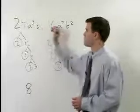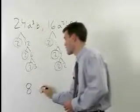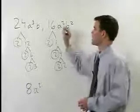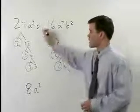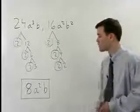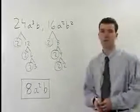Since we have an A cubed and an A squared, the greatest common factor will use A squared. Since we have a B and a B squared, the greatest common factor will use B. The answer, therefore, is 8A squared B.